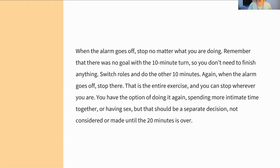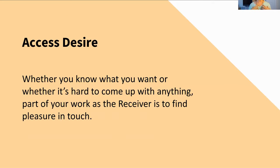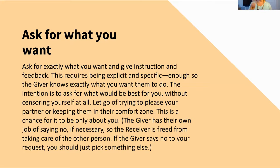The receiver's jobs: when you are the receiver, your first job is to access desire. You're trying to figure out some way you actually would like to be touched, working to find some pleasure in that. It does not need to be sexual. If you don't know what you want, you start anywhere and see if you can develop some sort of preference. Start by having them tap your elbow — you're just going in the moment. Again, it's okay to practice and experiment. You don't have to know, but you're trying to access that desire for touch.